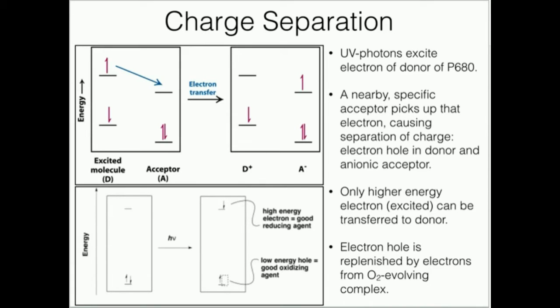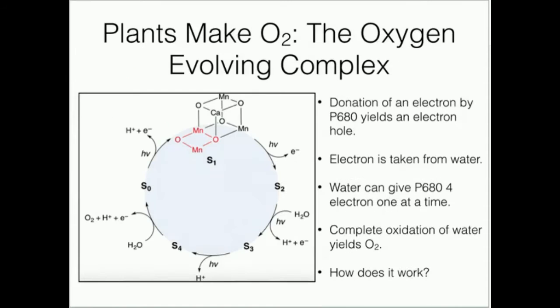But the fact remains we have this electron hole for P680. It needs another electron so it can get back down to this state over here in the bottom left. How does it get those electrons? Well, we have to go back to something we probably learned in high school biology or some kind of general biology class.